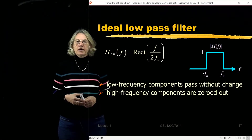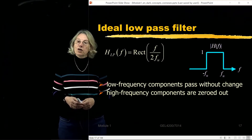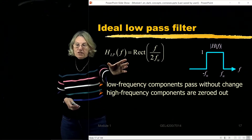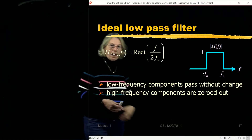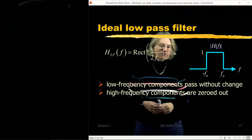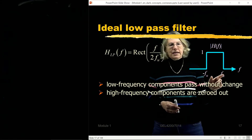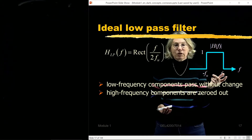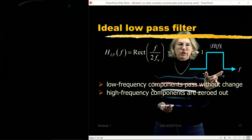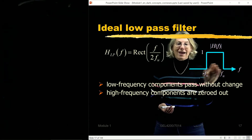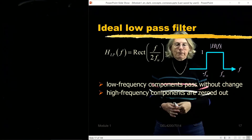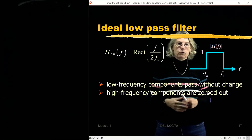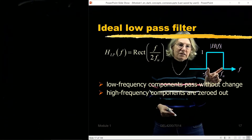A second ideal filter commonly seen in communication systems is the ideal low-pass filter. By definition it is a rectangle in the frequency domain, centered at DC — at frequency zero — with a maximum frequency fu. Between minus fu and fu the function equals 1, and everywhere else it equals 0. An easy way to write this is a rectangle of f divided by 2fu, where 2fu is the width.